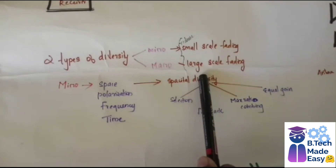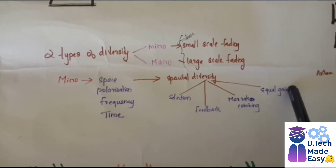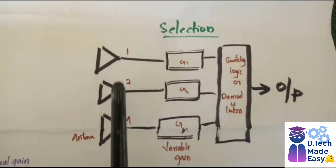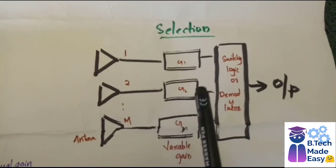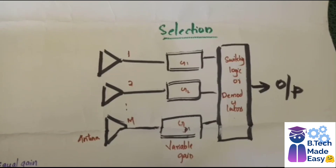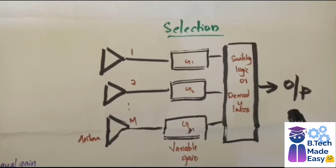Spatial diversity is classified into four types: selection, feedback, maximum ratio combining, and equal gain. In selection diversity, 1 to M antennas are used, each with different gains from G1 to GM. The instantaneous SNR is produced, and the best signal is selected, demodulated, and the output is produced. The major disadvantage of selection diversity is that it is not applicable in real-time applications because the switching time is too time-consuming.